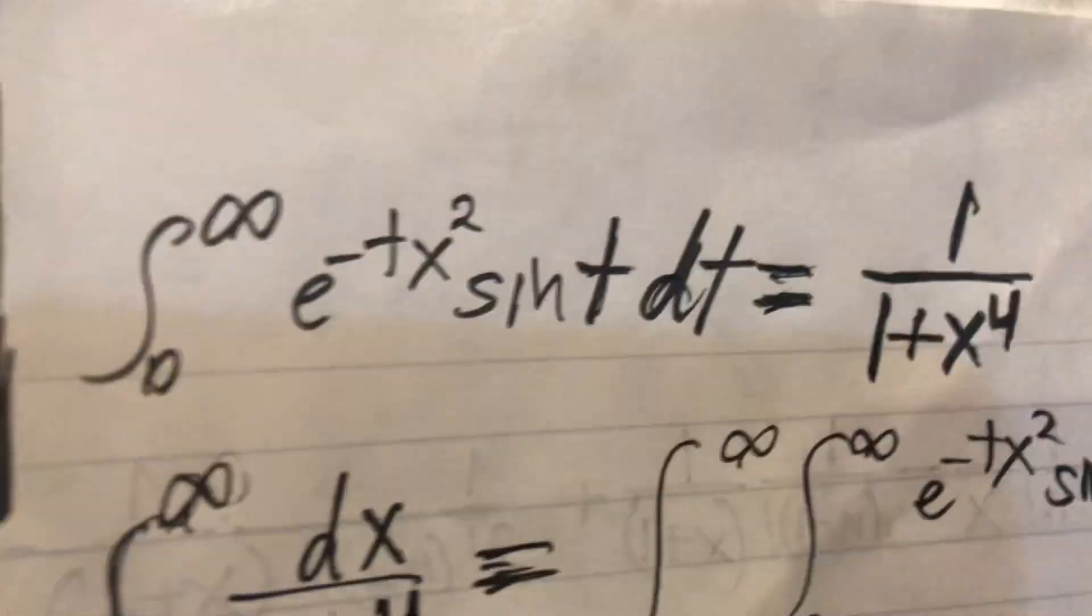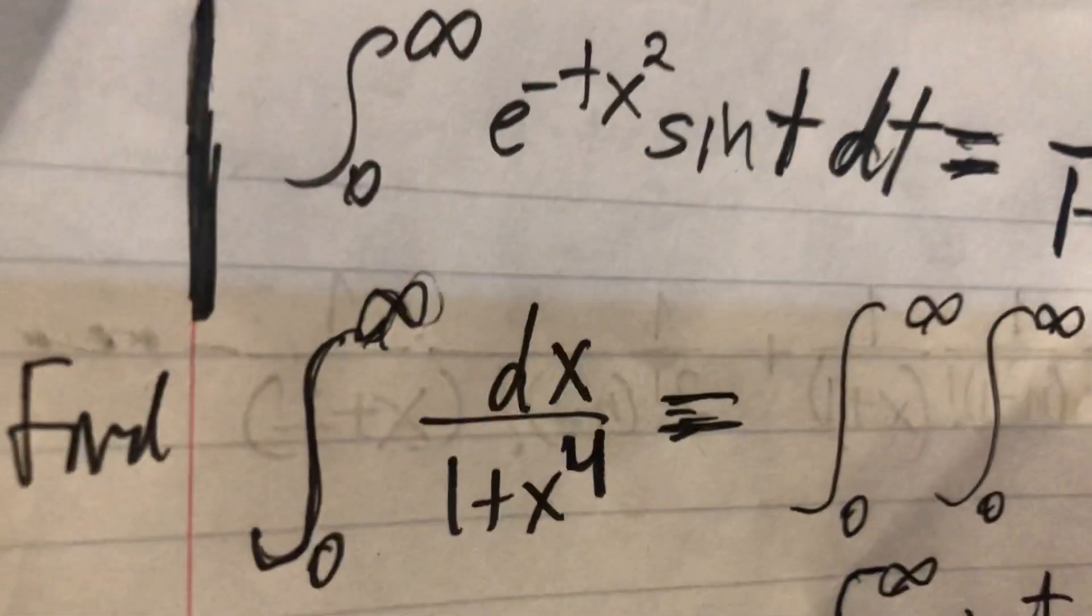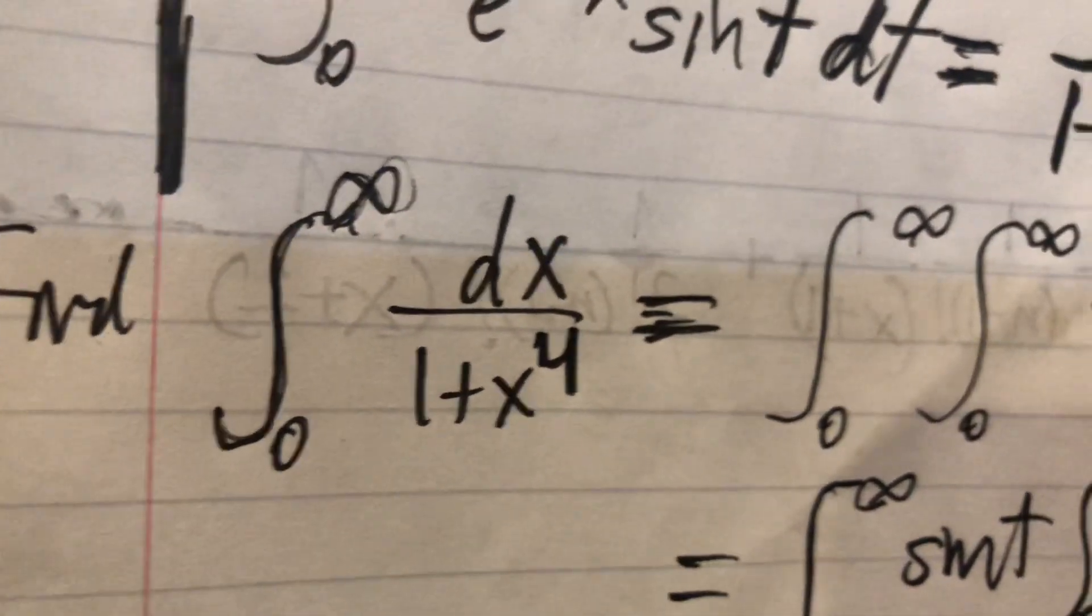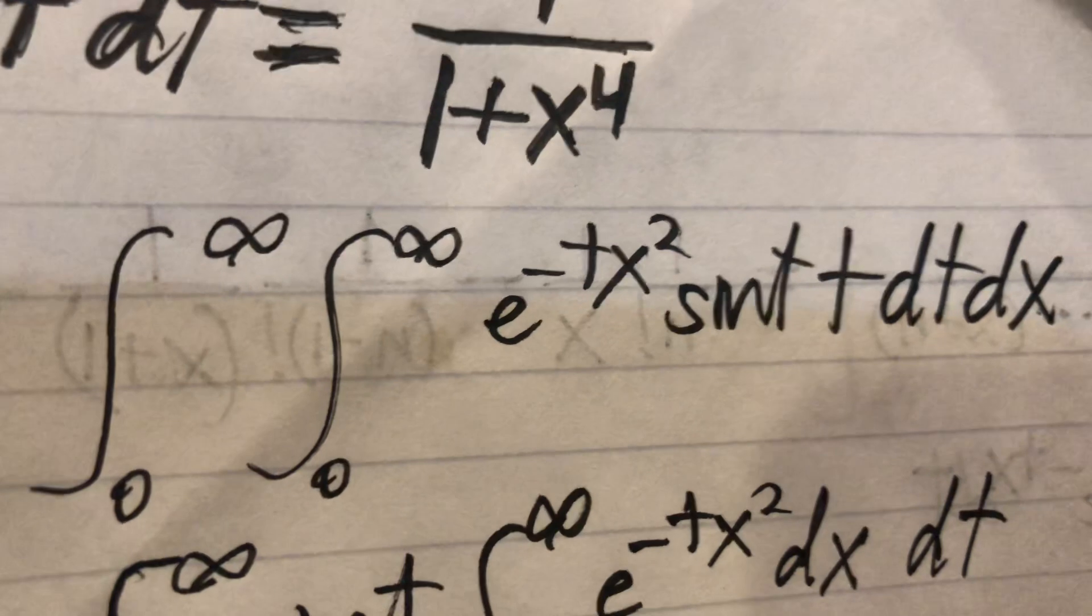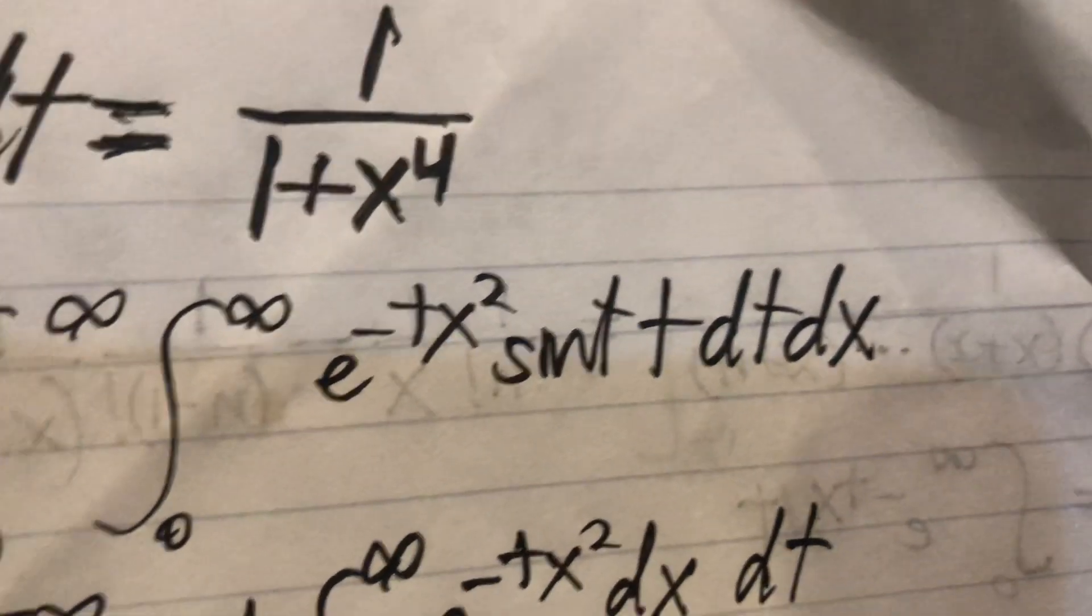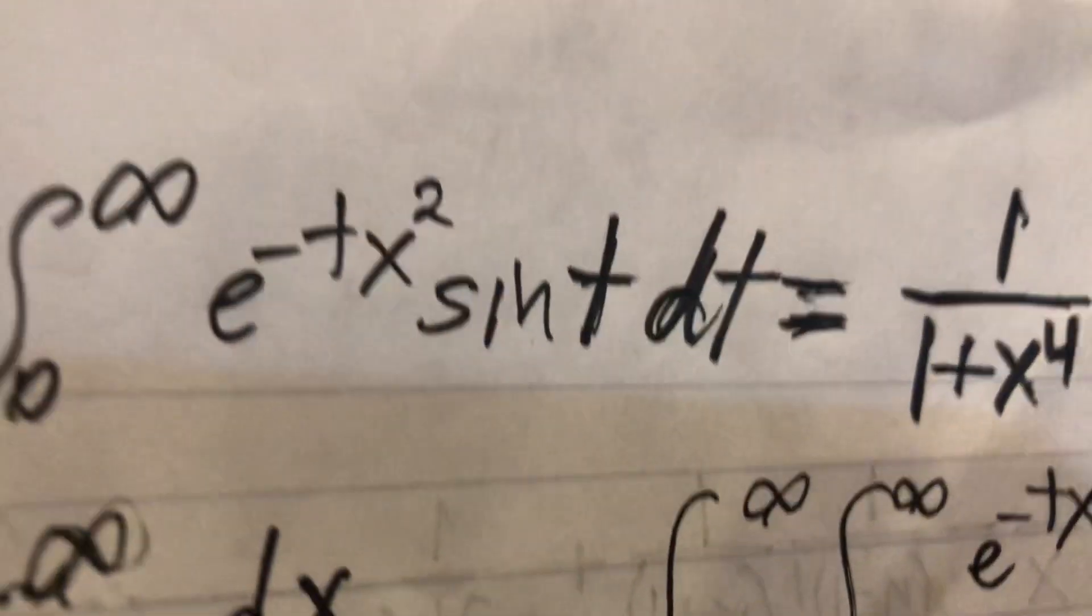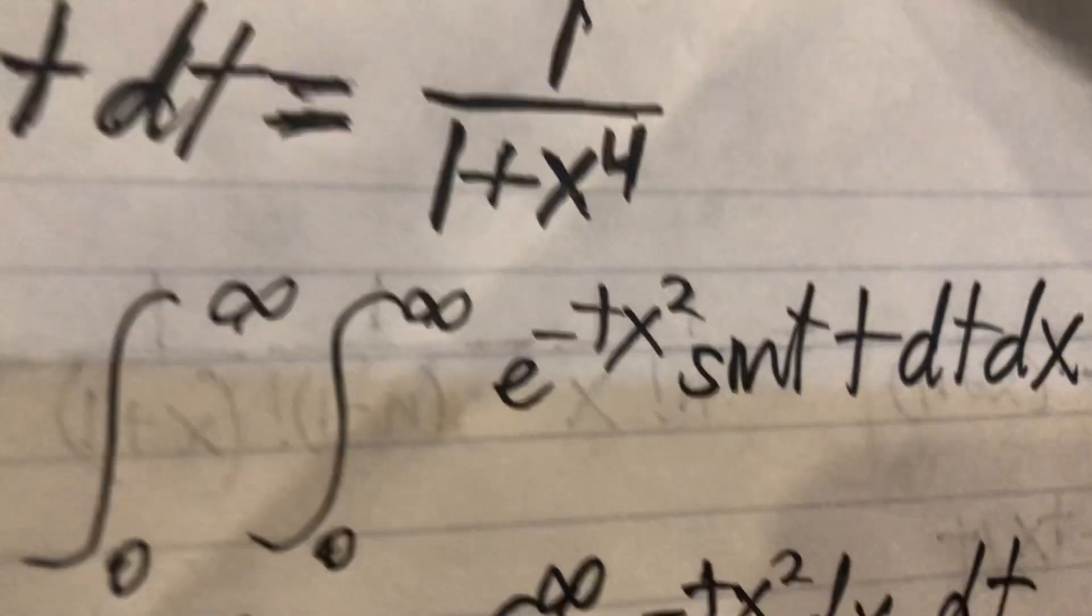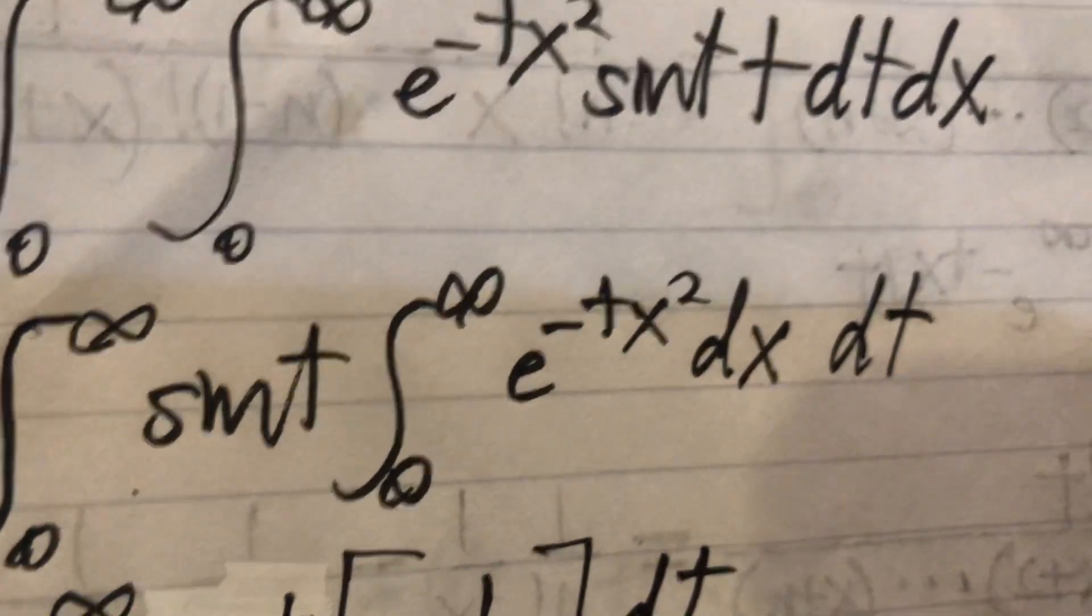But look what we're picking up - we're picking up another integral from zero to infinity. So we put it all together - there's our two integrals from zero to infinity dt dx. Now we want to integrate with respect to dx, so we bring anything related to dx into the party.